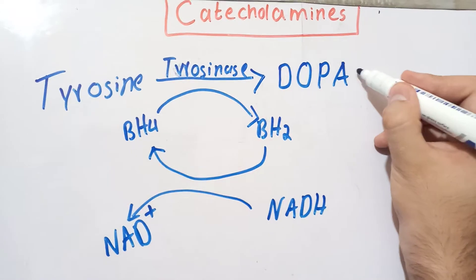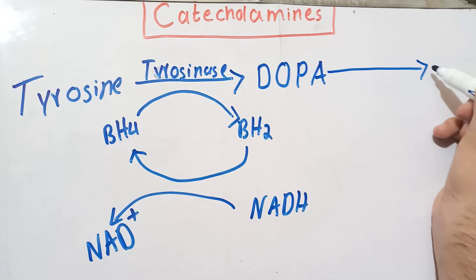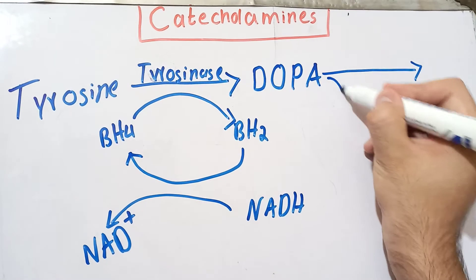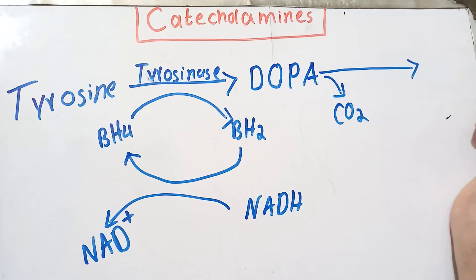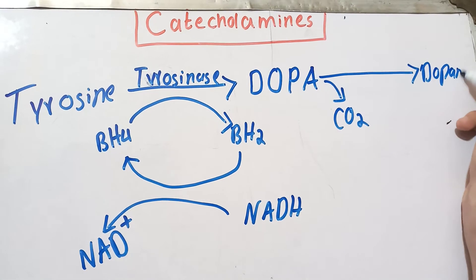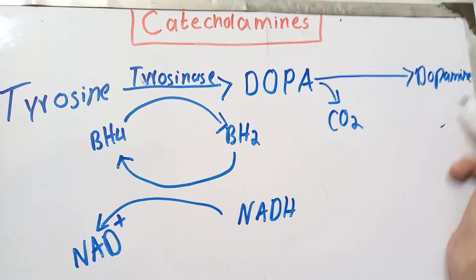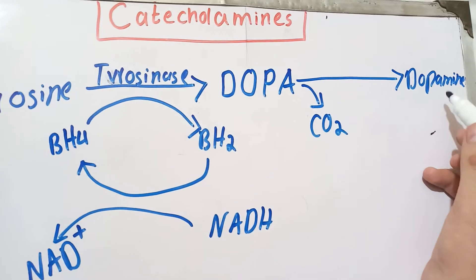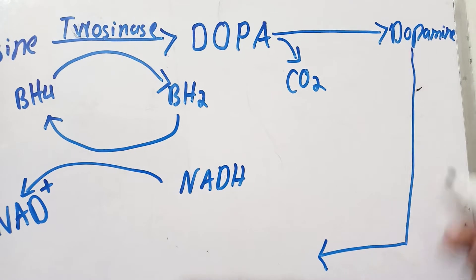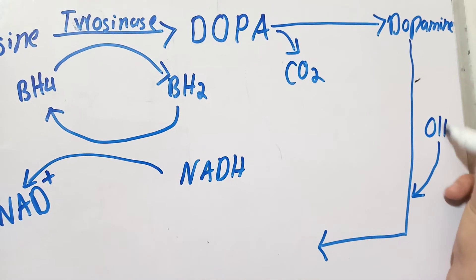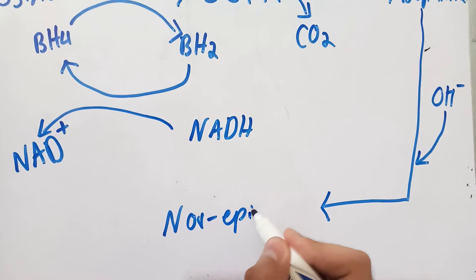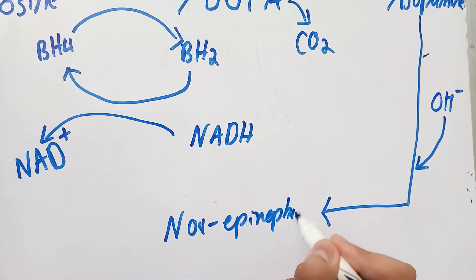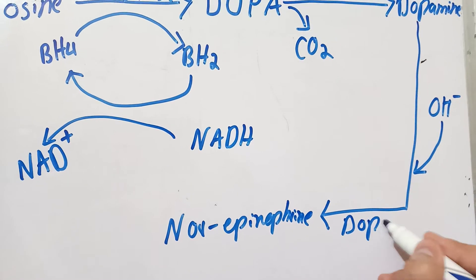The DOPA that has been formed is decarboxylated by an enzyme called dopa decarboxylase into dopamine. The other two amines are in turn formed from dopamine. Dopamine undergoes hydroxylation — a hydroxyl group is added — by the enzyme dopamine beta-hydroxylase, and the resulting compound is called norepinephrine.